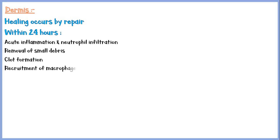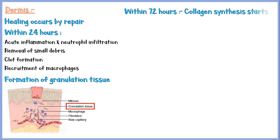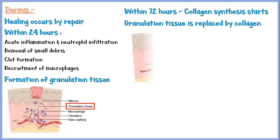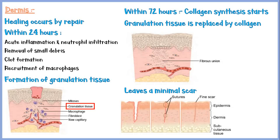Within 48 hours, formation of granulation tissue starts, and within 72 hours, collagen synthesis starts. The granulation tissue will then be gradually replaced by collagen. Because the wound edges were closely approximated, healing will leave a minimal scar at the site of injury. Here is another image showing the steps in healing by primary intention.